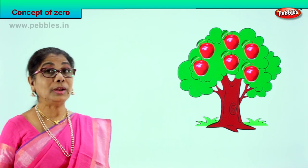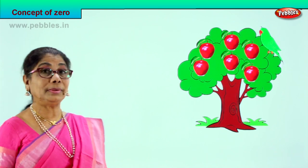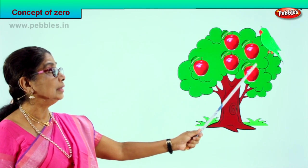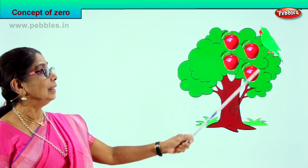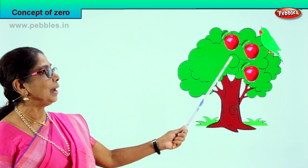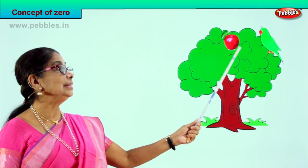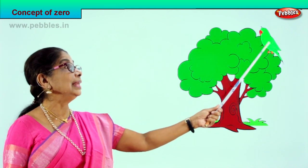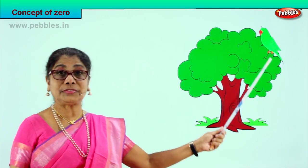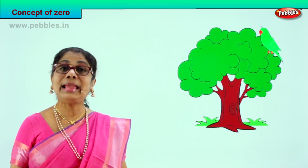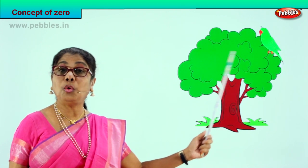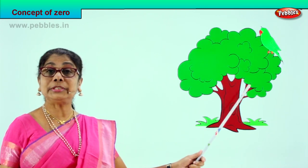Now let's look — a birdie comes in, a number of birdies come in, and they want to eat the apple. That birdie eats away one apple, two apples, one by one — three apples, four apples, five apples, six apples. The little parrot ate all the apples from this tree. How many apples did we have? Six.